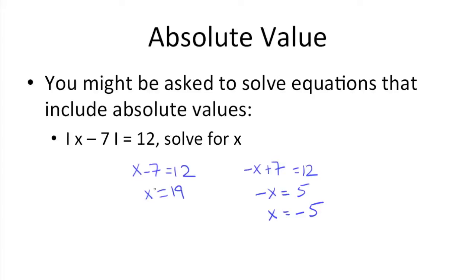The reason that's the case is if you plug 19 in here, 19 minus 7 is 12. If you were to plug negative 5 in, we would get negative 5 minus 7 is negative 12, and the absolute value symbols get rid of the negative, and you're left with 12. So both of these answers work.